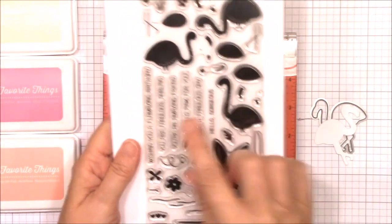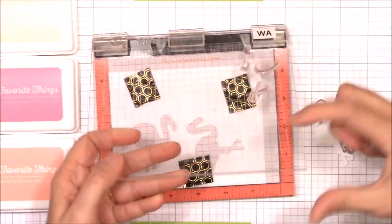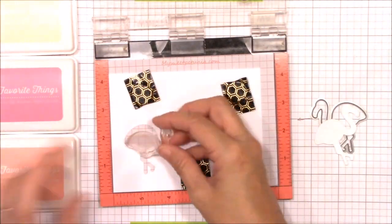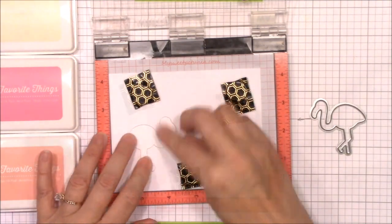Next, I chose one of the adorable flamingo images from the Flamazing stamp set. The images in this stamp set have multiple layers so you can stamp each piece with different colors. I found that it was easier to stamp the flamingo by aligning the stamps inside the negative of the die cut flamingo.